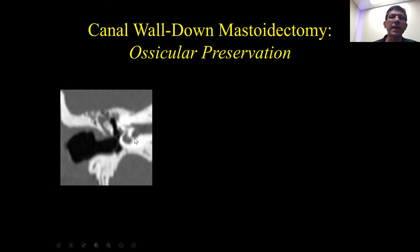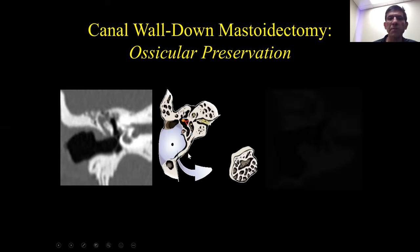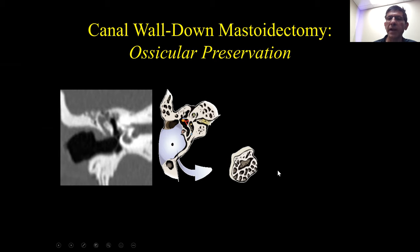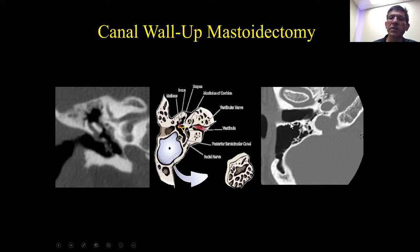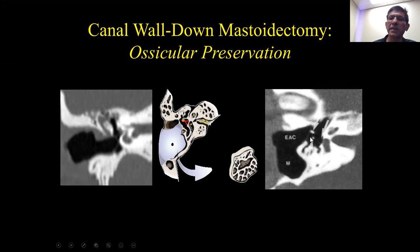For mastoidectomies that are a little bit more extensive but have not involved the ossicles, this is called the canal wall down mastoidectomy, where the surgeons remove the posterior external auditory canal. The posterior canal wall has been taken down; here we see the remnant of the external auditory canal and here is our mastoid bowl. The canal wall has been taken down, but they have preserved the ossicles — the malleus, incus, and stapes.